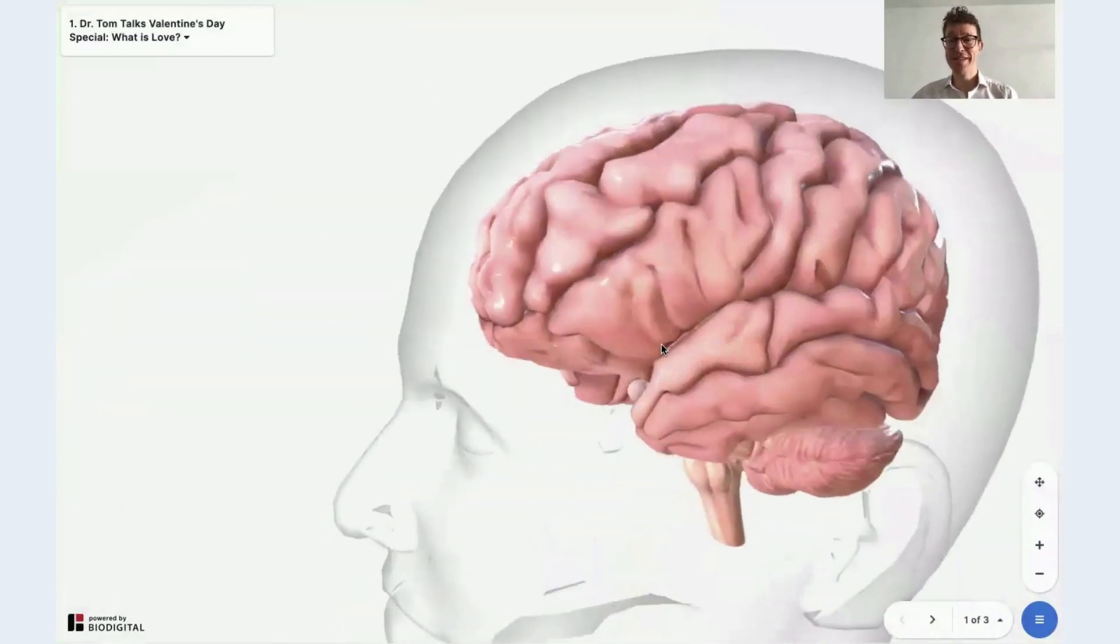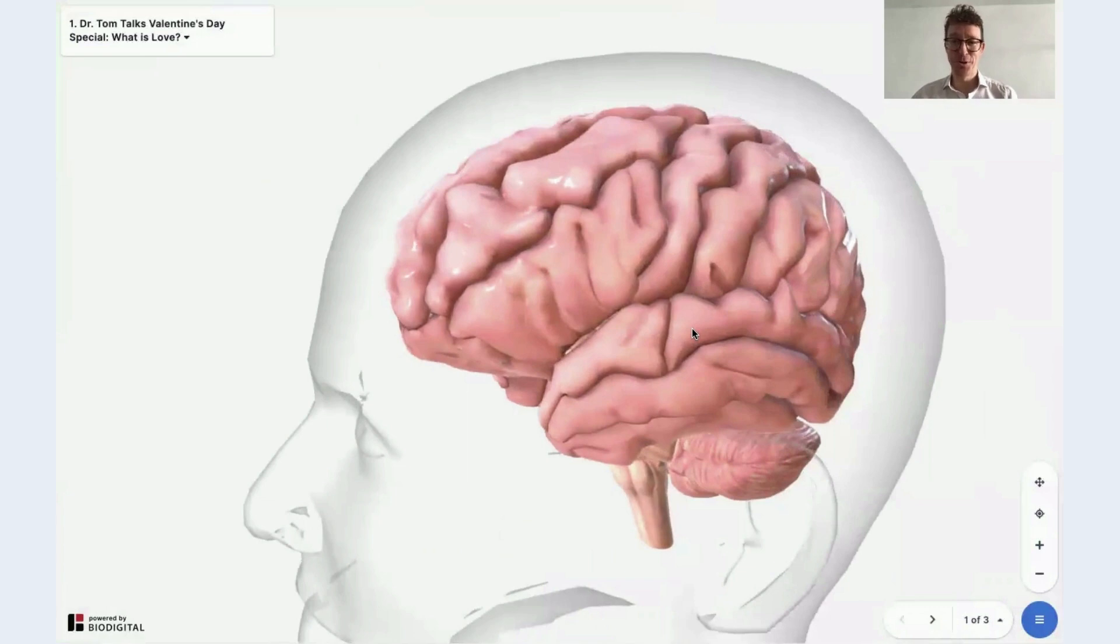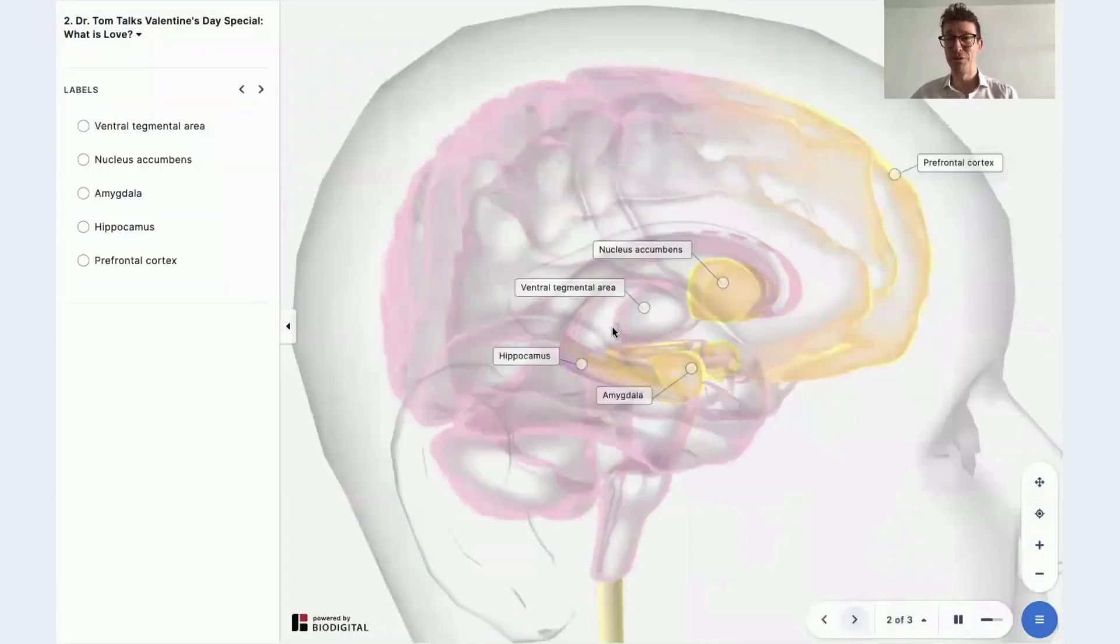So I'm going to delve deep inside the brain, and we're going to talk about all of the hormones at play, why we feel the way we do, and we're starting in this area of the brain, the reward system.